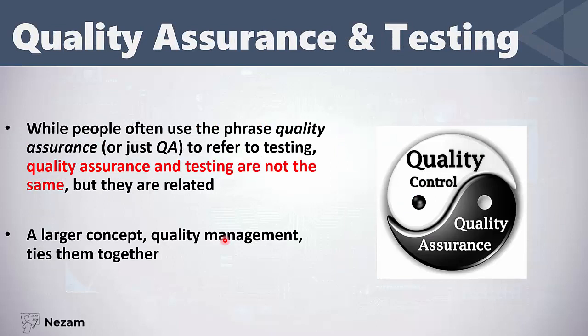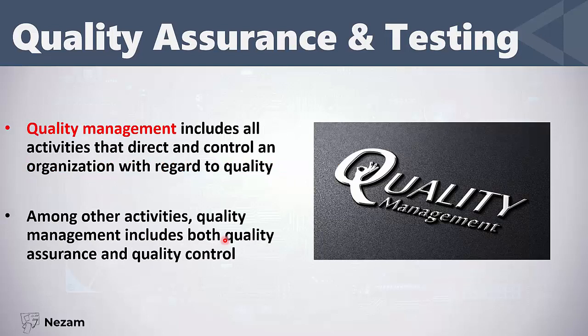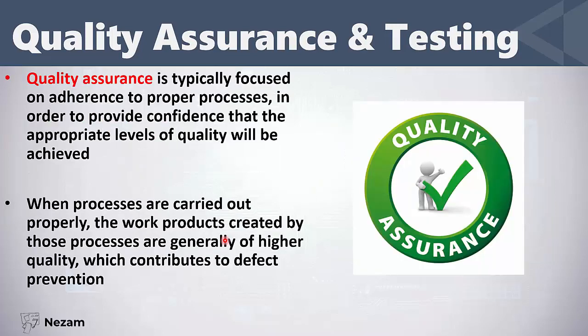Let's talk about quality assurance and testing. People often use the phrase 'quality assurance' or QA to refer to testing, but this is not correct — quality assurance is different from testing, though there is a relationship between them. The larger concept is quality management, which ties quality assurance and testing together. Quality management includes all activities used in organizations with regard to quality, including both quality assurance and quality control.